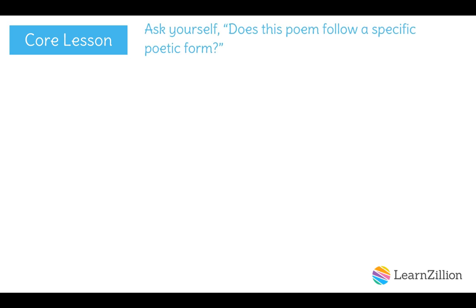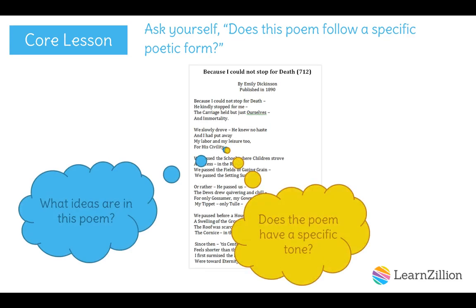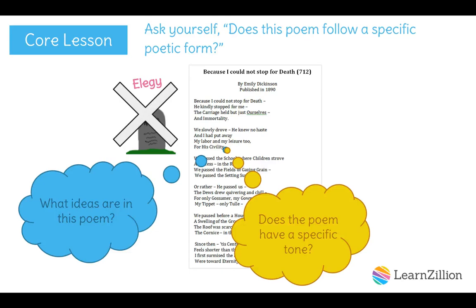We've done quite a bit of work with this poem, but now we need to think about what poetic form it takes. The poem focuses on the speaker's carriage ride with death and the things she sees and experiences along the way. Though the subject is death, this poem doesn't have a fearful or foreboding tone — it has a peaceful, steady, relaxed tone. An elegy is written to honor or mourn someone who has died, but our poem isn't really about honoring or mourning, and most elegies have a serious, mournful tone. So this is probably not an elegy.